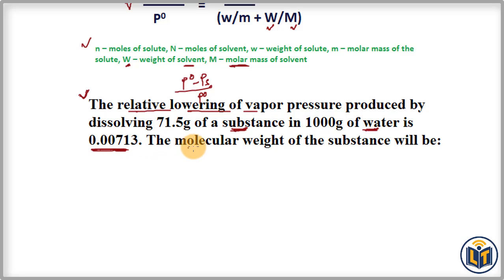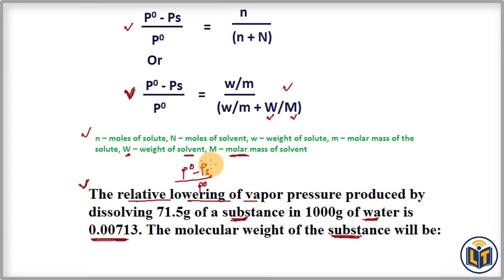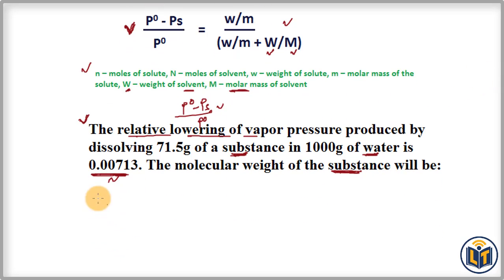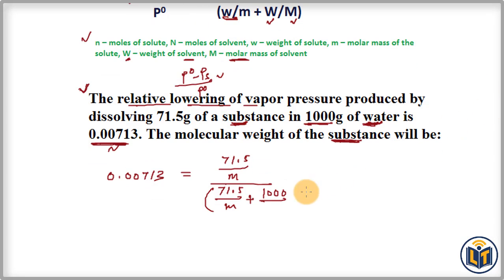The question asks us to calculate the molecular weight of the non-volatile solute. Applying Raoult's Law formula, we plug in the values: (P° - Ps) / P° = 0.00713, which equals (w/m) / (w/m + W/M). Here, 71.5 grams is the mass of solute divided by m (molar mass to find), and 1000 grams of water divided by 18 g/mol as the molar mass of water.